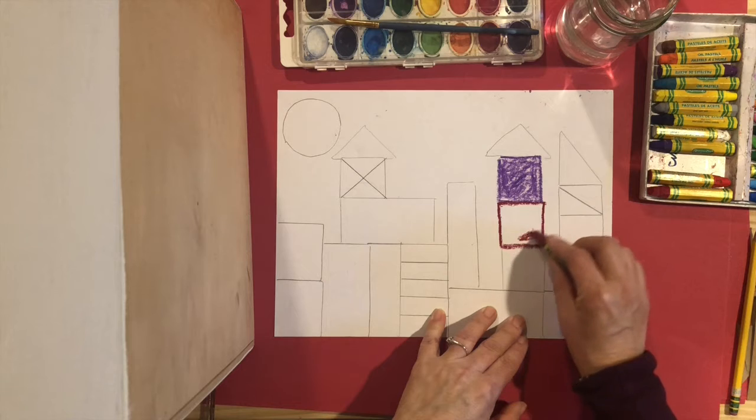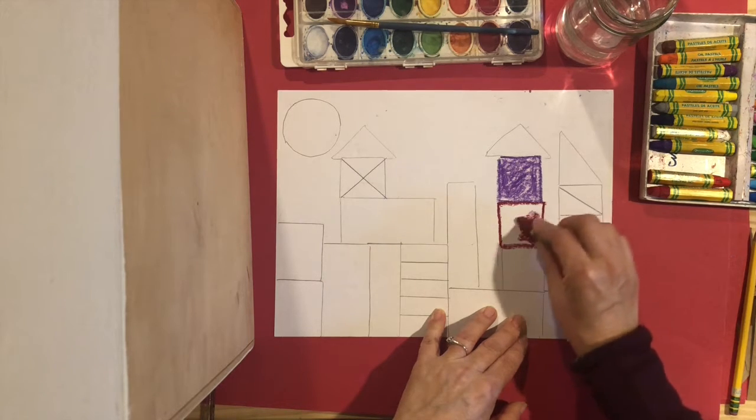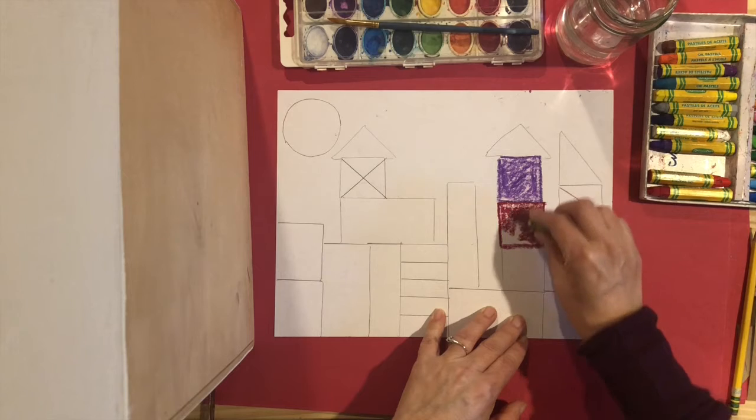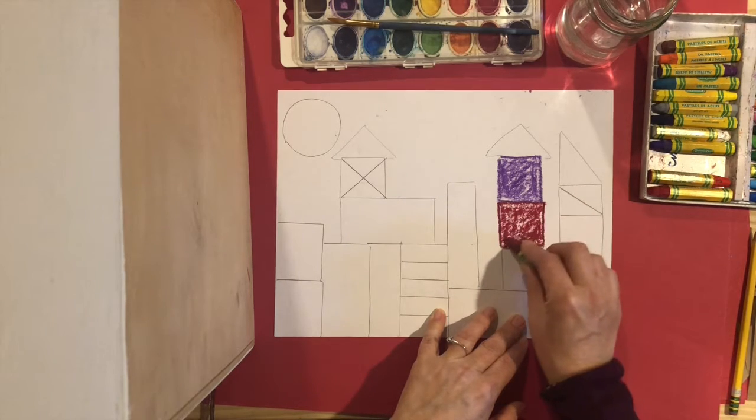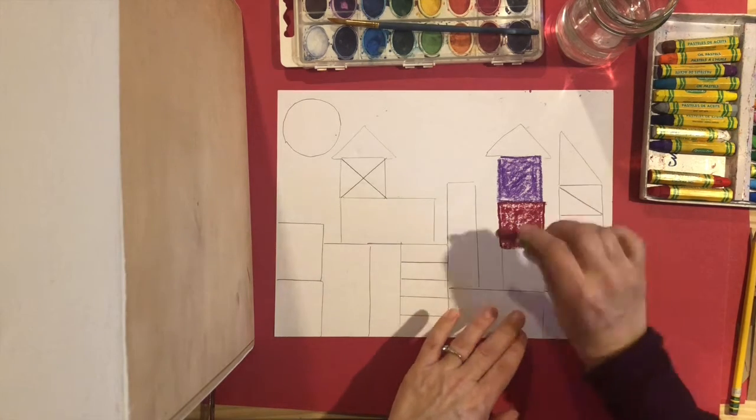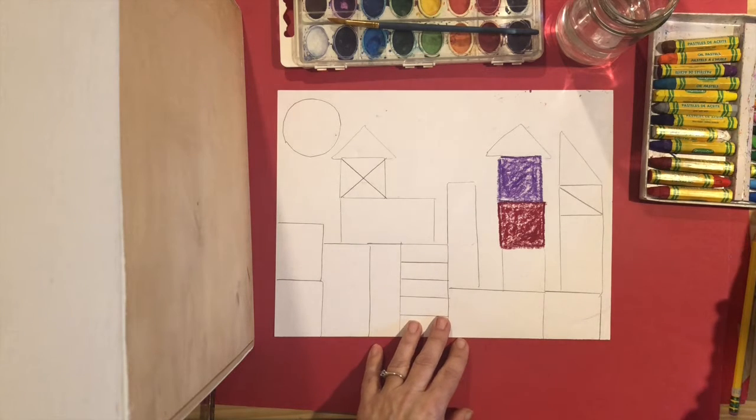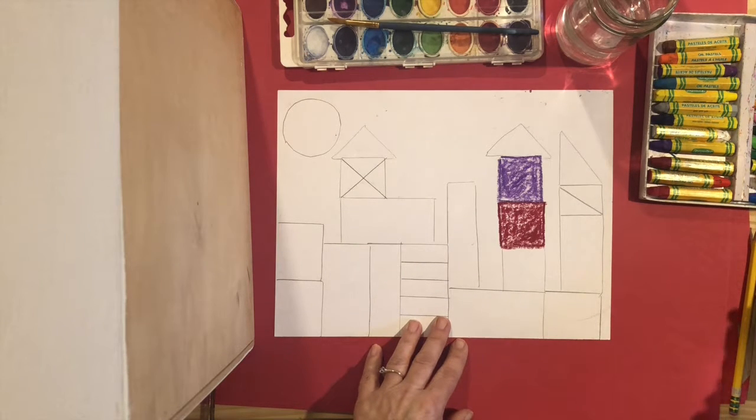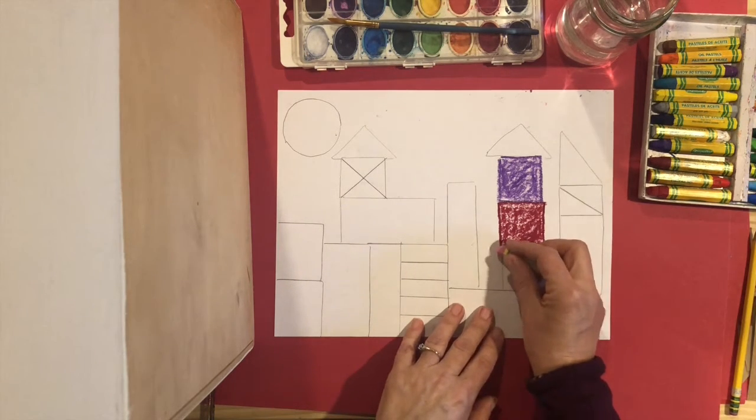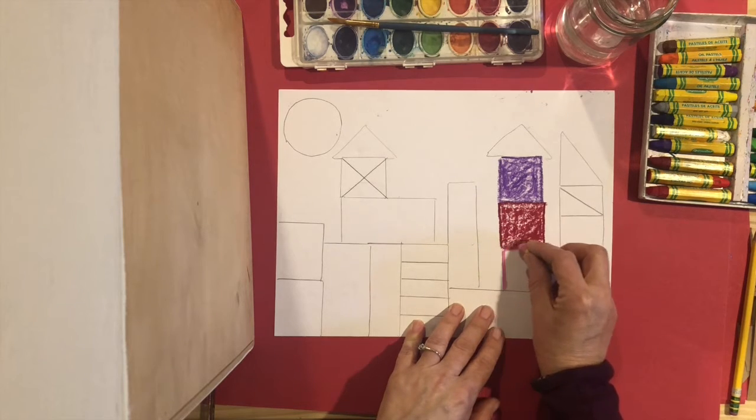And then lightly, very lightly color. You want to see some white this time. Sometimes we say press hard, we don't want to see any white, but this time I do want to see some white. So you would continue to outline all your shapes and color them...